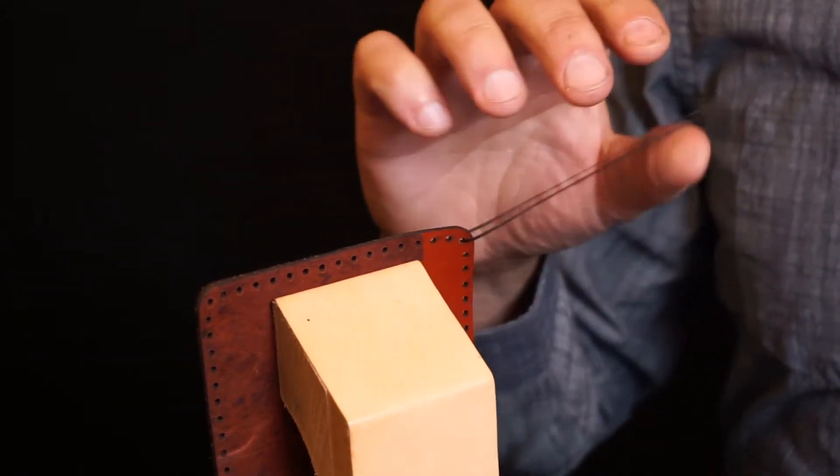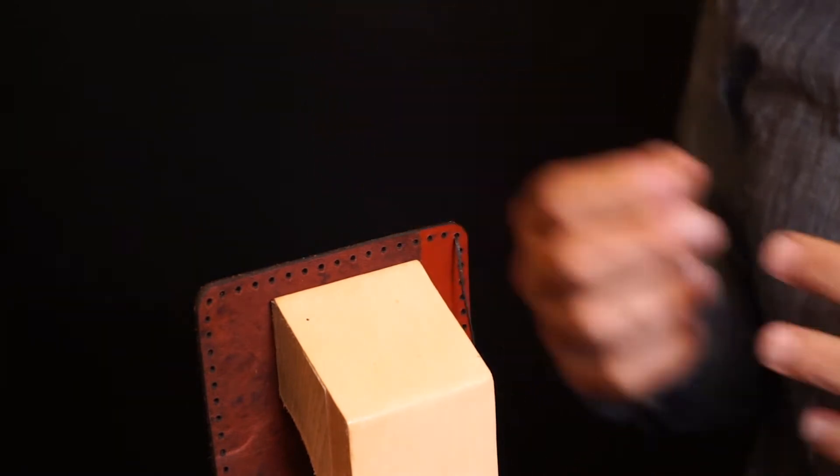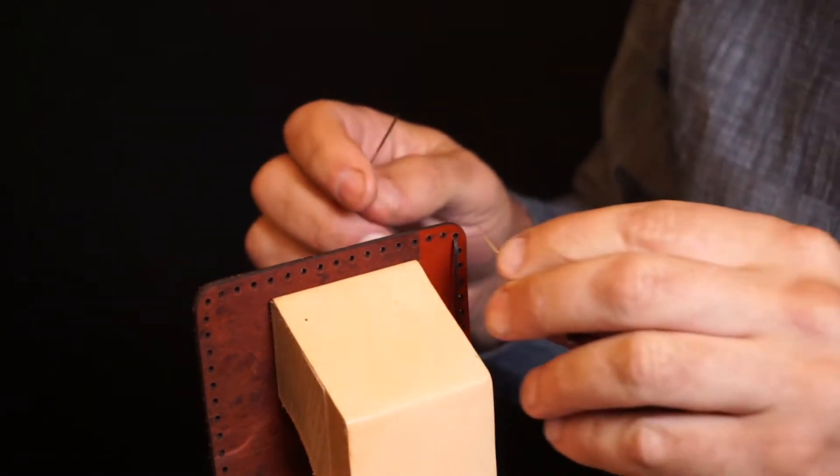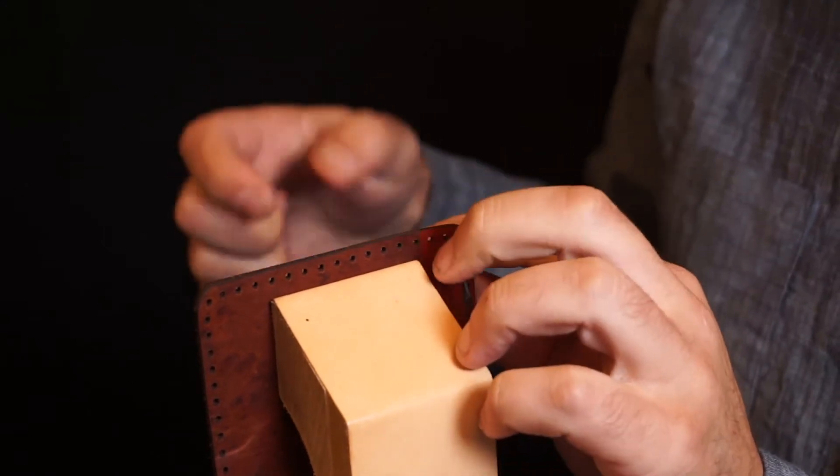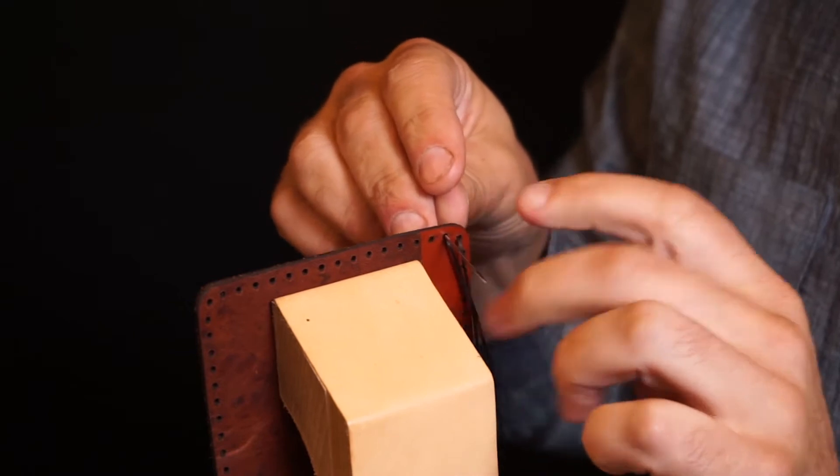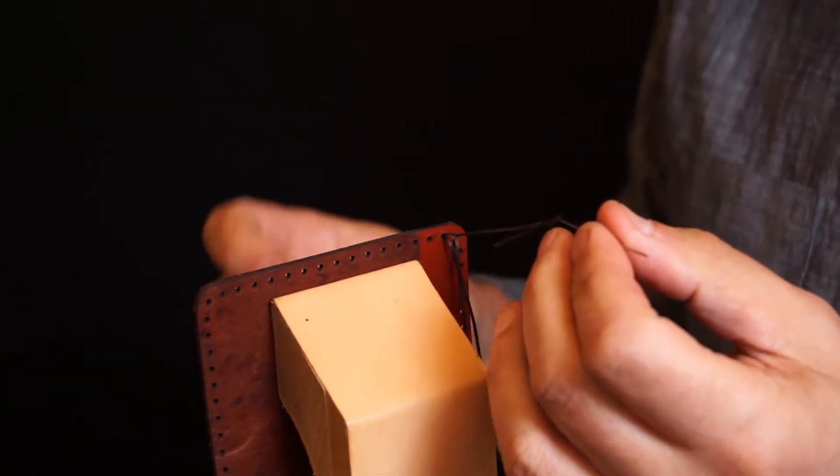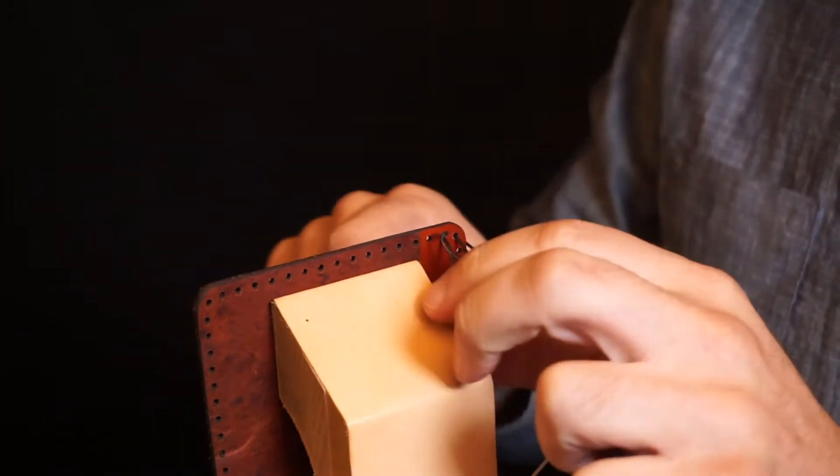For saddle stitching, we are going to always pass the needle on the face side first, this is the side that's facing the camera here, and then hold the thread back and away, so we can easily pass the second needle through the same hole. Be sure not to pierce the thread with that second needle, then pull both threads snug and repeat.